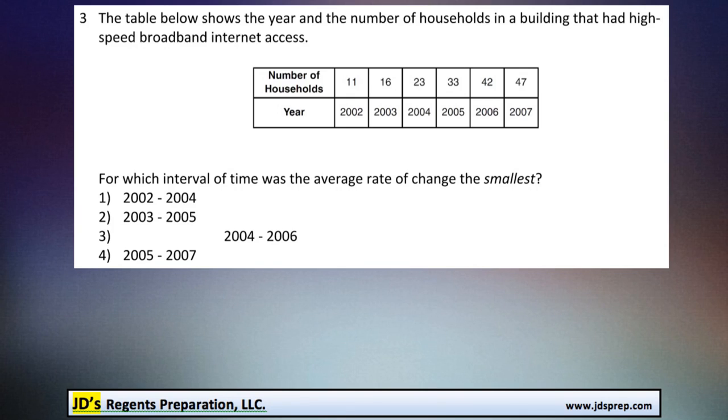Hello, and welcome to the third problem from the June 2016 Algebra Regents exam. In this question, we're looking at a table comparing the number of households in a building that have high-speed broadband internet access over years that have passed in time. The question is asking us to find which interval of time was the average rate of change the smallest.